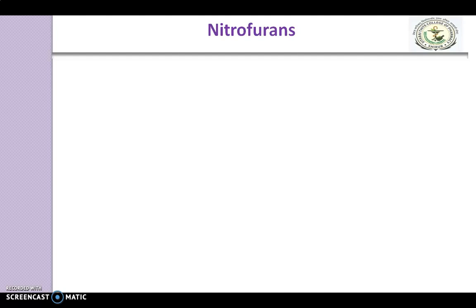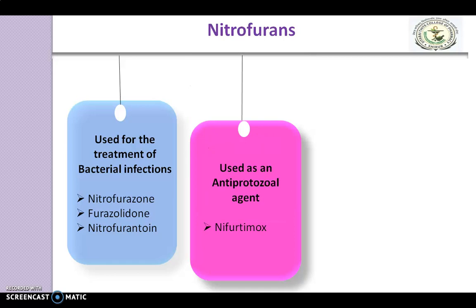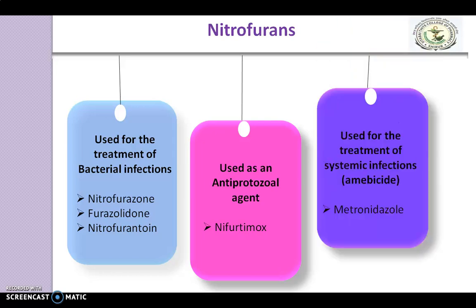In this slide, we discuss the uses of Nitrofurans. Firstly, Nitrofurans is used for the treatment of bacterial infections and it produces bactericidal actions. Examples are Nitrofurazone, Furazolidone, and Nitrofurantoin. Secondly, it is used as an anti-protozoal agent — example, Nifurtimox. And third, it is used for the treatment of systemic infections, showing amebicidal action — example, Metronidazole.